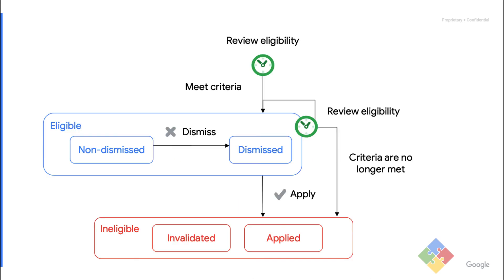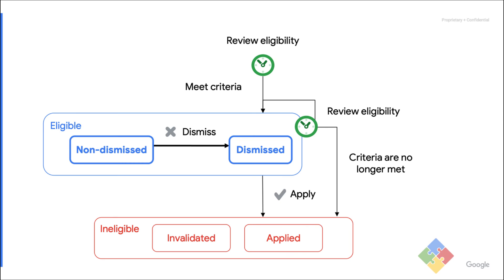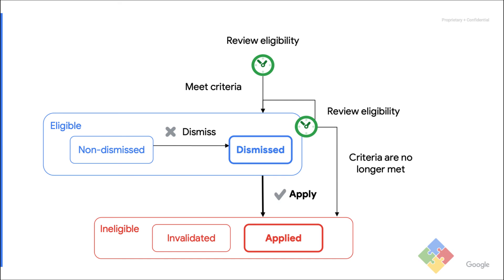Here is the complete life cycle of a recommendation, broken down into two main states with more details: eligible and ineligible. It's important to note that when a non-dismissed recommendation is applied, both the optimization score and the eligible recommendations are instantaneously updated. Same thing when a non-dismissed recommendation is dismissed — both the optimization score and the eligible recommendations are instantaneously updated, but only the optimization score changes because a dismissed recommendation remains eligible. This is also why a dismissed recommendation can be applied. When it's applied, both the optimization score and the eligible recommendations are instantaneously updated. But only the number of eligible recommendations changes this time, because the uplift associated with the recommendation was already taken into account when the recommendation was dismissed in the past.